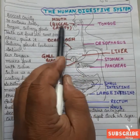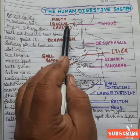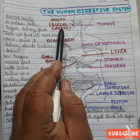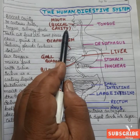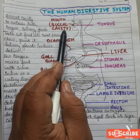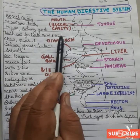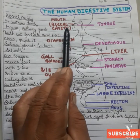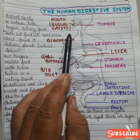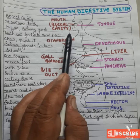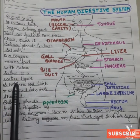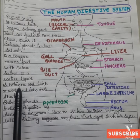The mouth cavity is called the buccal cavity. It contains teeth, tongue, and salivary glands. The function of teeth is to cut the food into small pieces, helping in chewing and grinding the food particles. Salivary glands are also present in our mouth — they produce saliva. The tongue mixes the food with the saliva.